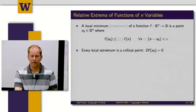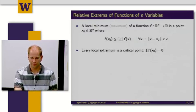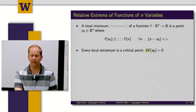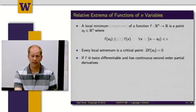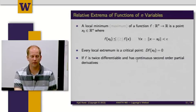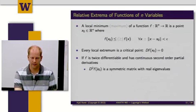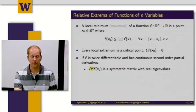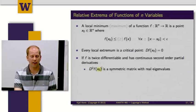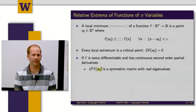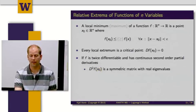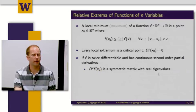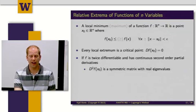Every local extremum is going to be a critical point. If I take the gradient of my function f and evaluate that at x0, I'm going to get 0. If f is twice differentiable and has continuous second-order partial derivatives, that was my condition for being able to exchange the order of taking partial derivatives. The Hessian, the matrix of second partial derivatives, evaluated at the point x0, is going to be a symmetric matrix. A symmetric matrix has real eigenvalues.